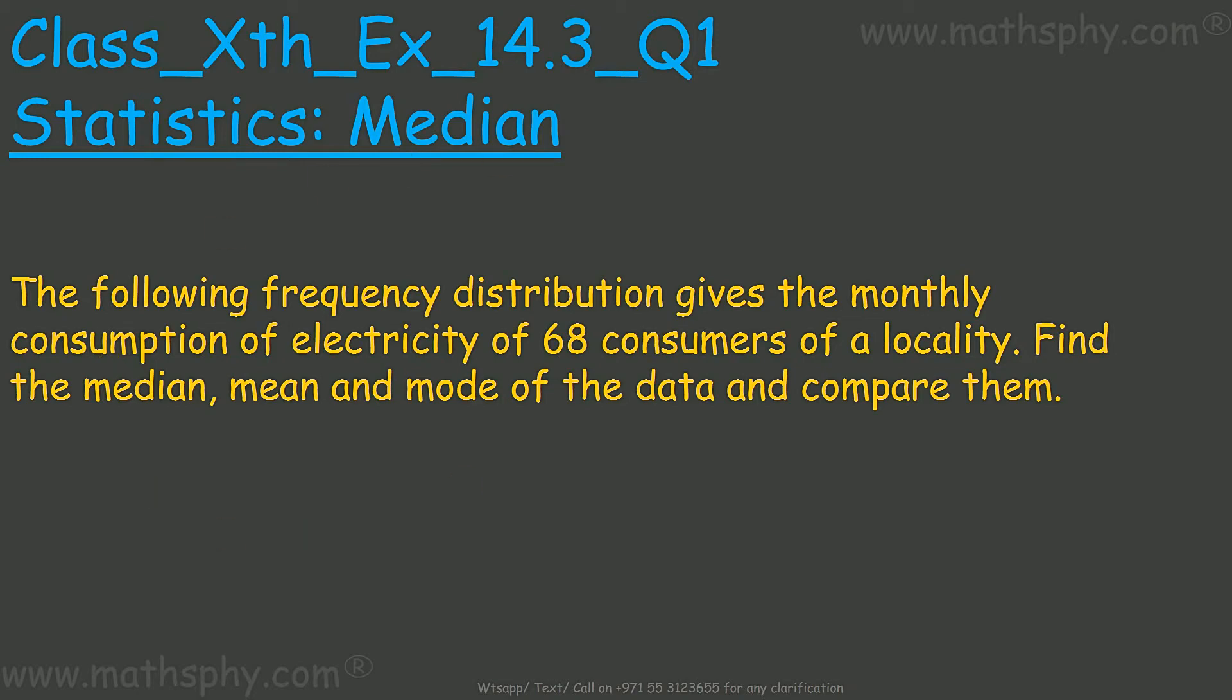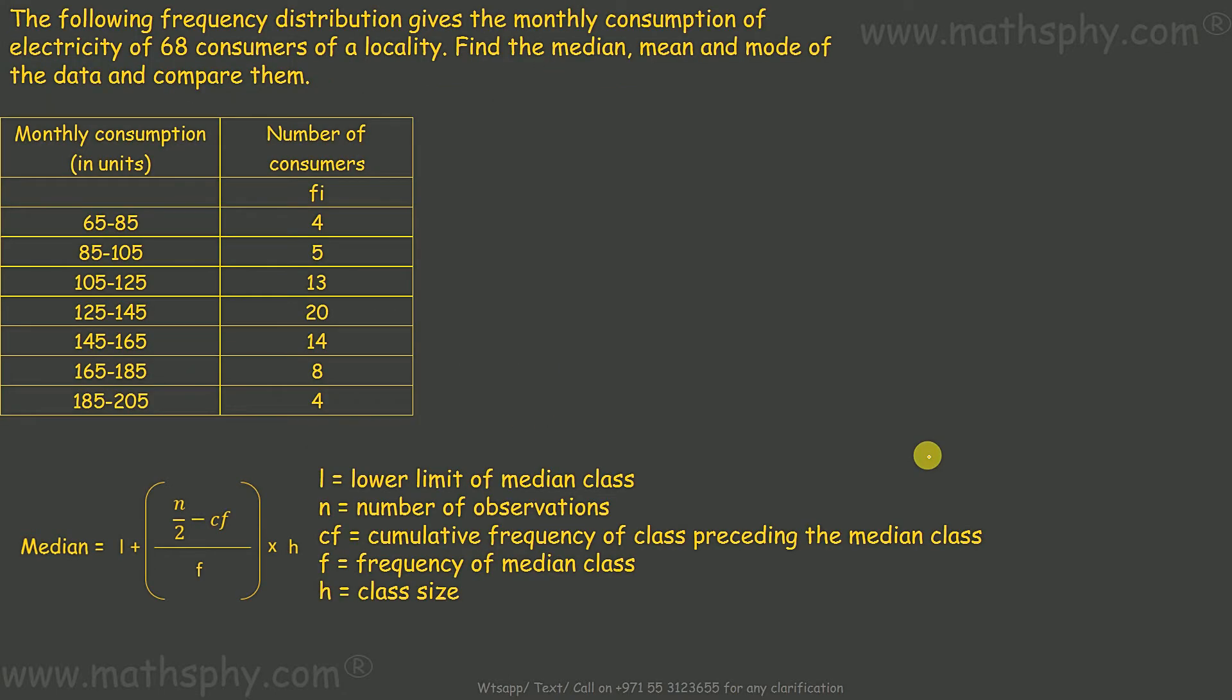This question says the following frequency distribution gives the monthly consumption of electricity of 68 consumers of a locality. Find the median, mean and mode of the data and compare them. Now, with this data here, we have to find out median, mean and mode.